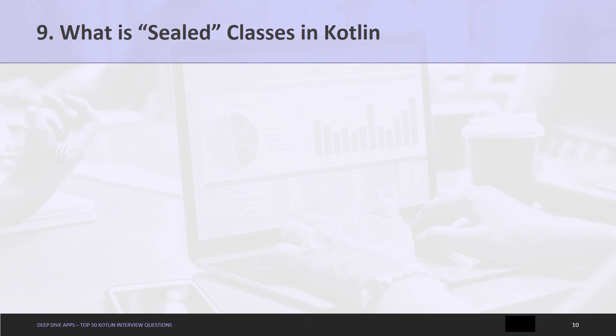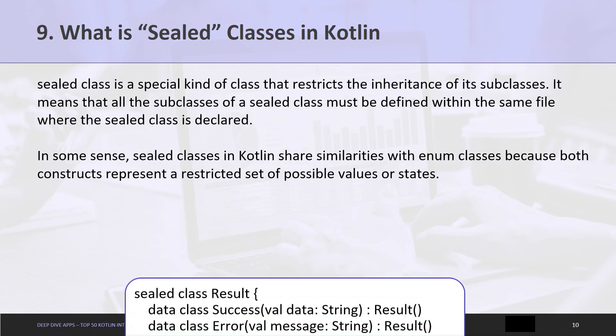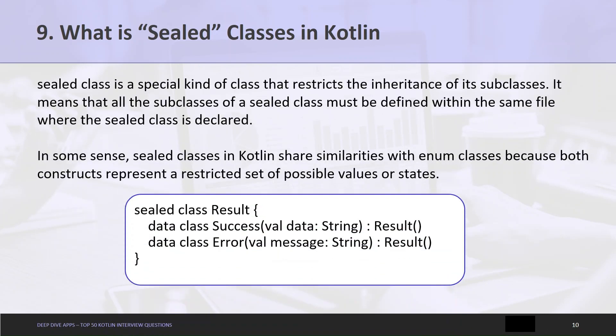Question 9: What are sealed classes in Kotlin? A sealed class is a special kind of class that restricts the inheritance of its subclasses. All subclasses of a sealed class must be defined within the same file where the sealed class is declared. In some sense, sealed classes share similarities with enum classes because both constructs represent a restricted set of possible values or states.